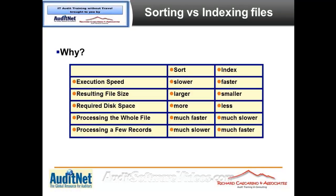So the difference between the two: doing a sort is a lot slower than doing an index. With an index, I simply take the field I want things sorted by — let's say the customer number — along with the linkage to the actual record, create a little file with just those two fields, sort that little file, and that's it.